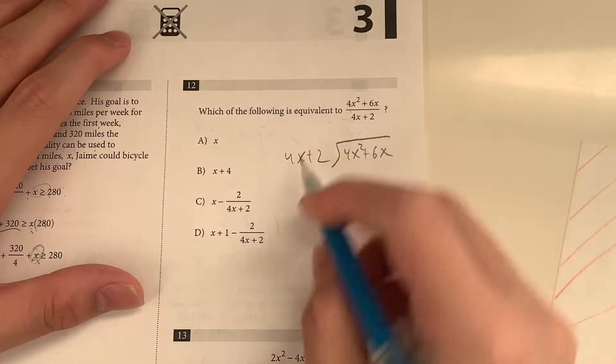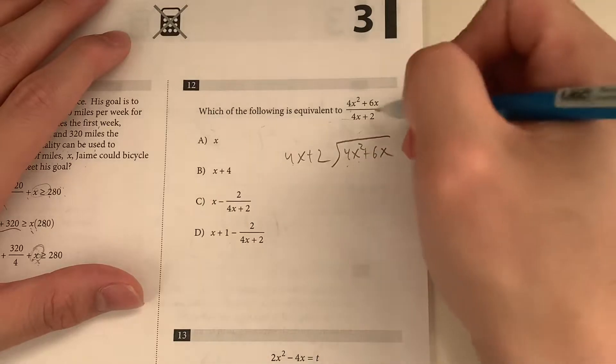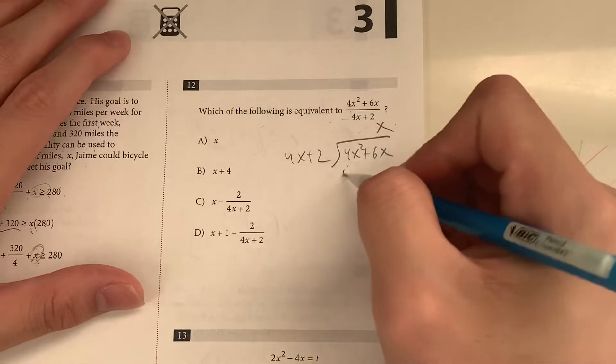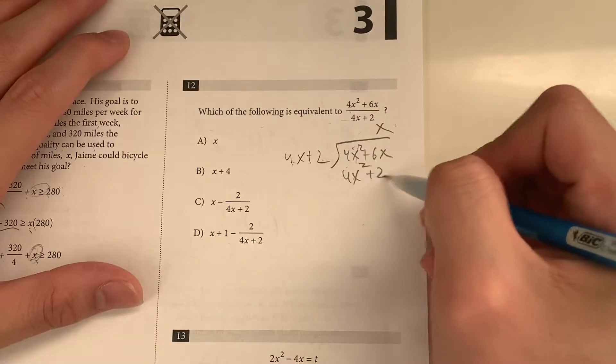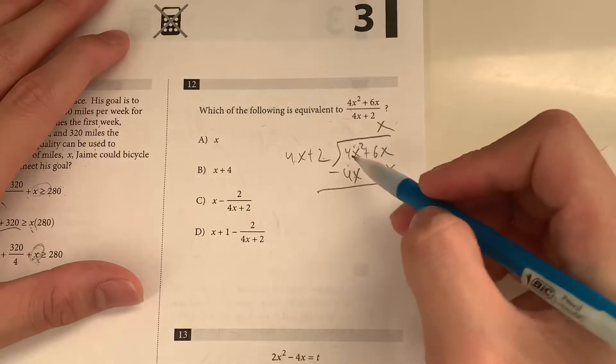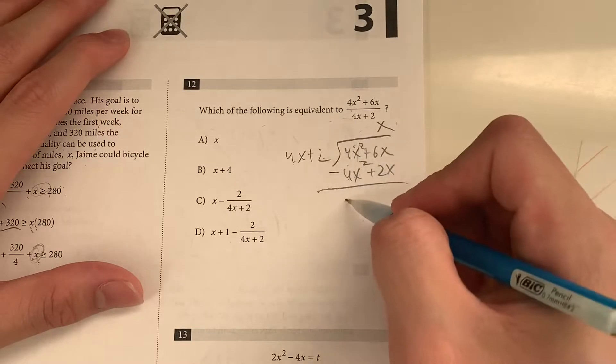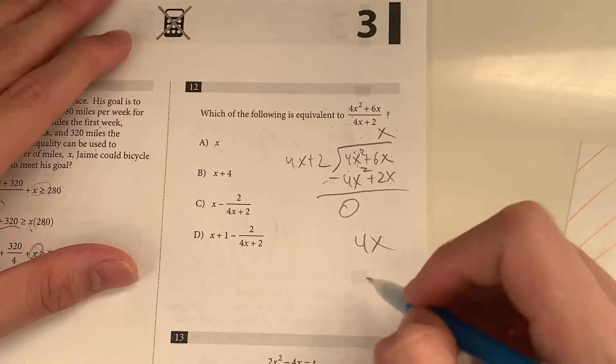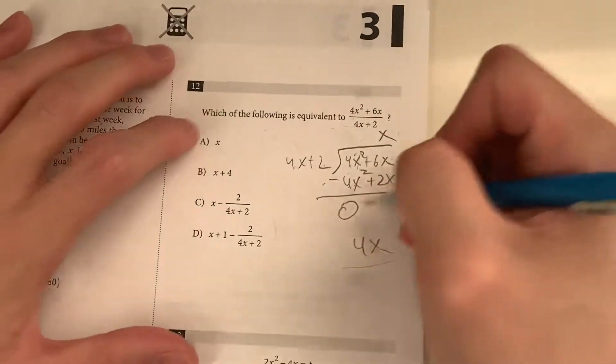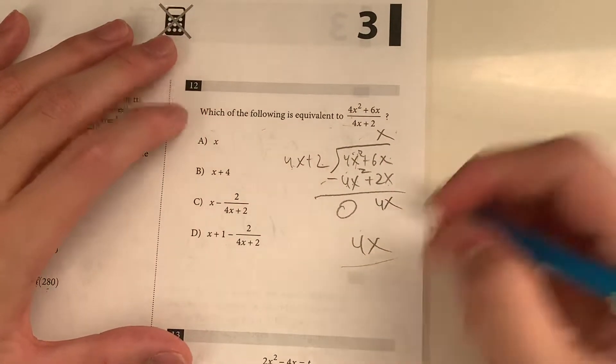4x squared plus 6x. So how many times does 4x go into 4x squared? x times, right? 4x times x is 4x squared. So these two perfectly align. 2 times x is 2x. Now we just subtract them. 4x squared minus 4x squared. That gives us 0. 6x minus 2x gives us 4x. So it's a remainder of 4x. And then what do we do from there?